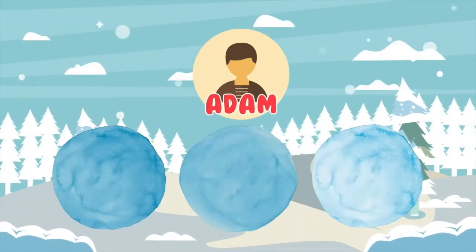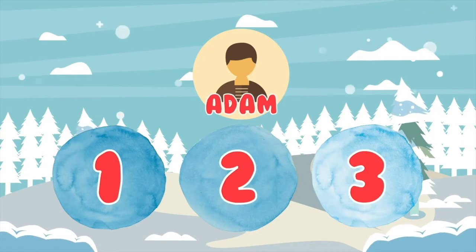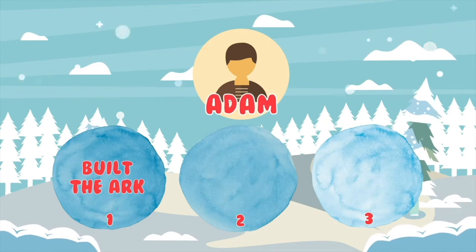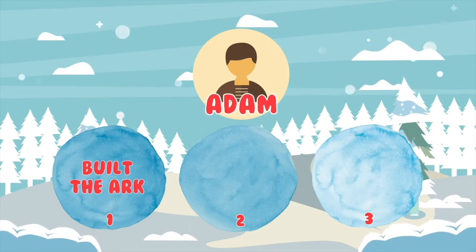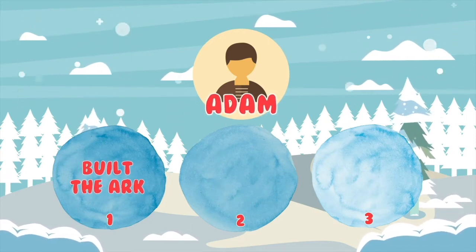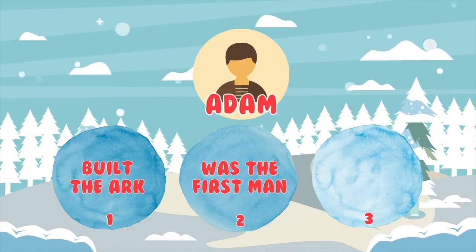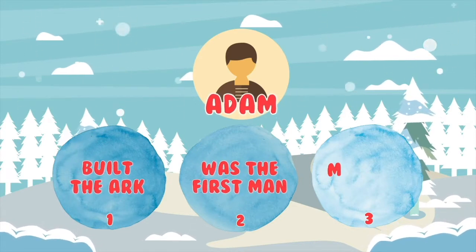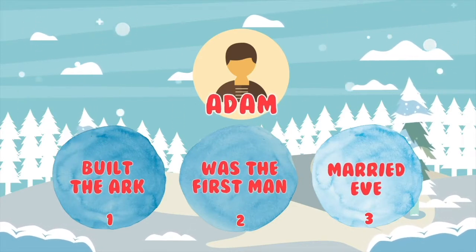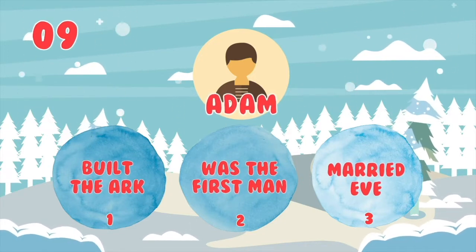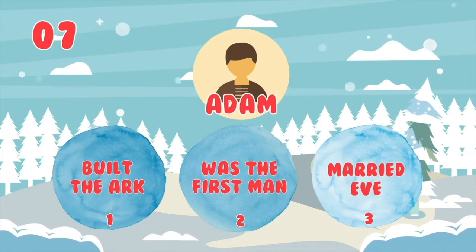Our next Bible character is Adam. Which of these is not true about Adam? One: Adam built the ark. Two: Adam was the first man. Three: Adam was married to Eve. Okay, time to get those fingers up. Which snowball do you think is not telling the truth?